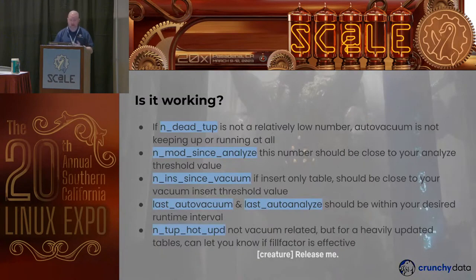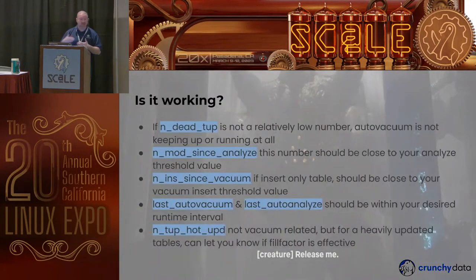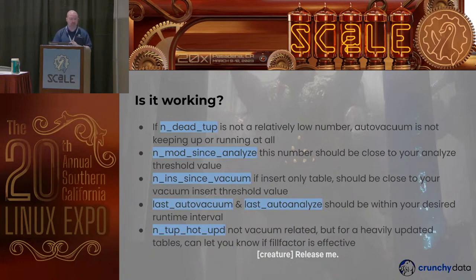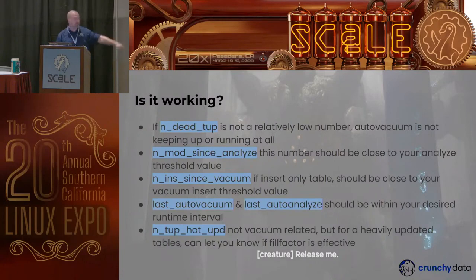To verify it's working, go back into pg_stat_all_tables and check if n_tup_del is a relatively low number — or if it's a very high number not going down, that means auto vacuum isn't keeping up or isn't running on that table. There's also n_mod_since_analyze to tell you if you're hitting your analyze target, n_ins_since_vacuum for insert-only tables, and timestamp values for last_autovacuum and last_autoanalyze to confirm you're hitting your weekly or twice-daily targets. If you're using fill factor and heap-only tuple updates, the number of hot updates is also tracked so you can verify those are effective.